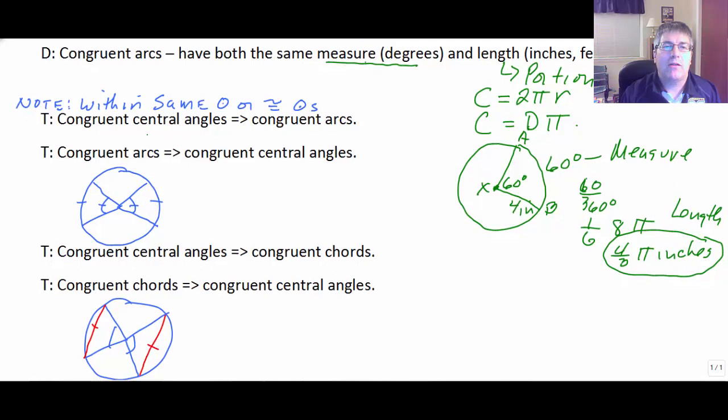Let's move on to some of the theorems here and work with our central angles. So, if we have two central angles, and these could be within the same circle or congruent circles, it doesn't matter. But if our central angles are congruent, then our corresponding arcs must be congruent.